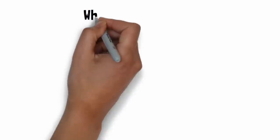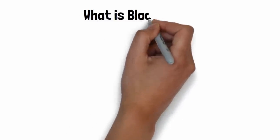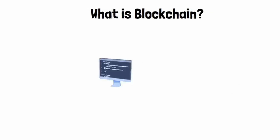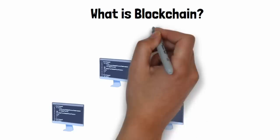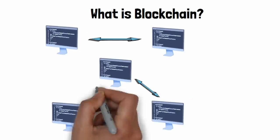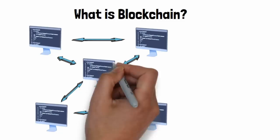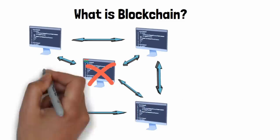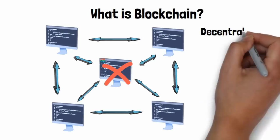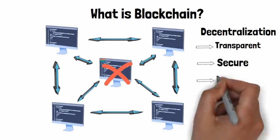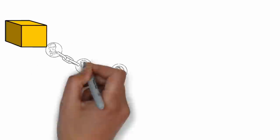In this video we'll break down what TON is, how it works, and the role TON Coin plays in its ecosystem. Before diving into TON, let's quickly cover what blockchain technology is. At its core, blockchain is a decentralized digital ledger that records transactions across multiple computers, ensuring that even if some computers fail, the data remains secure on others.